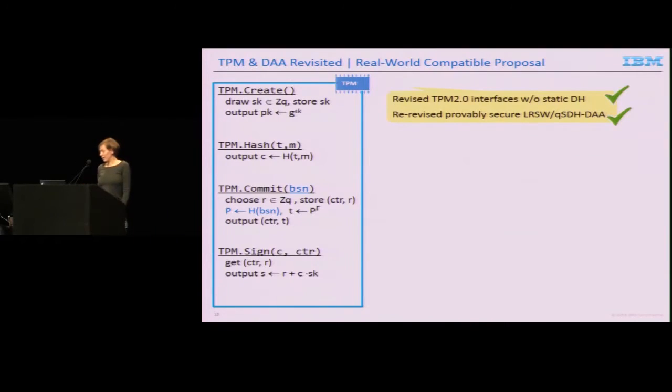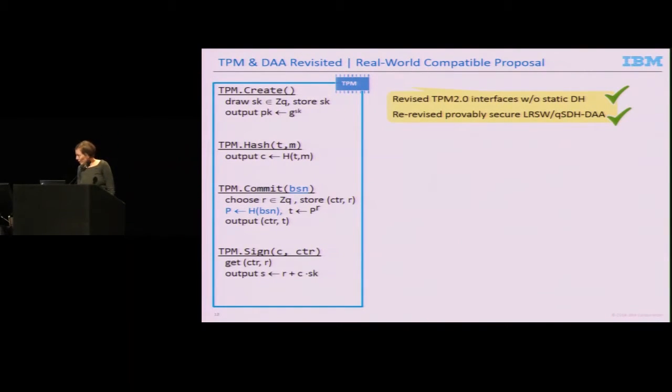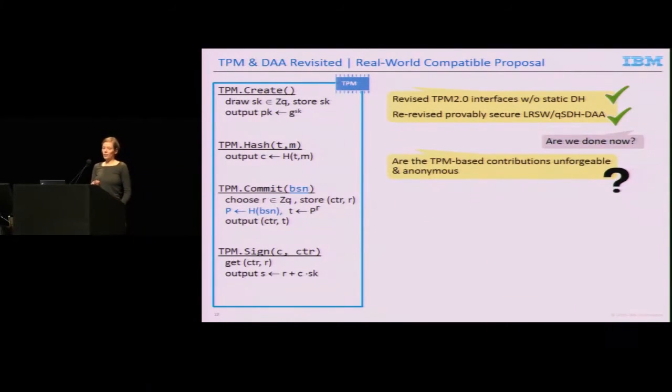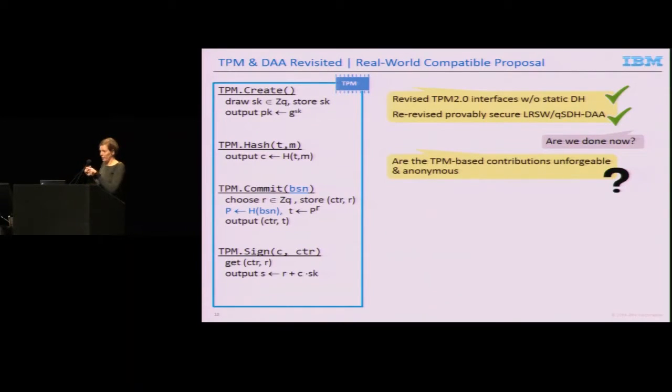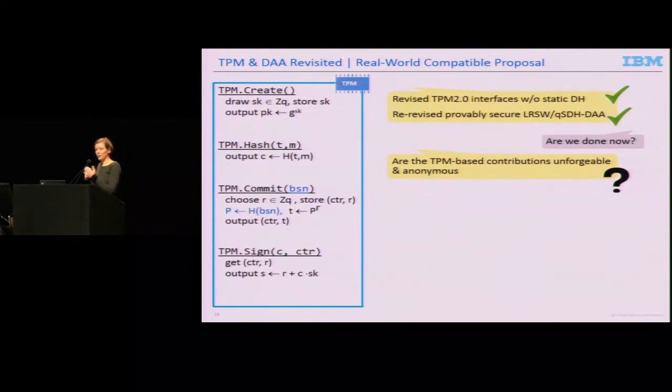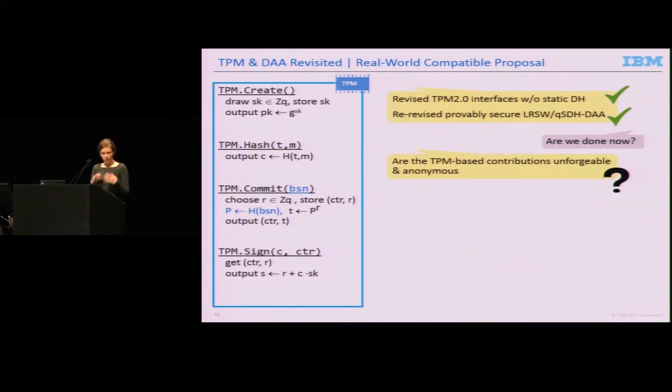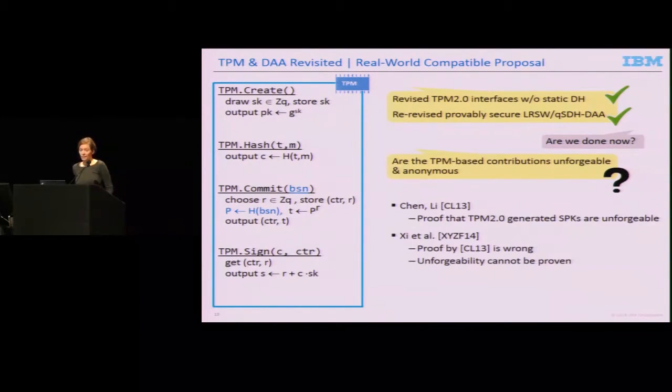So then we're done, right? We have revised TPM interfaces that do not require static Diffie-Hellman oracle and a provably secure protocol. Well, we're not really done because the only thing we've shown so far is we have a provably secure protocol and we can get it to work with those interfaces, but we haven't shown that the instantiation with those interfaces—the orchestration—gives us a secure protocol. In particular, what still should be shown in a provably secure manner is that the TPM-based contribution, the TPM-based signature proof of knowledge, is unforgeable and anonymous.